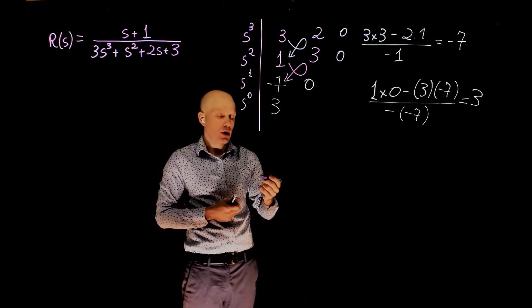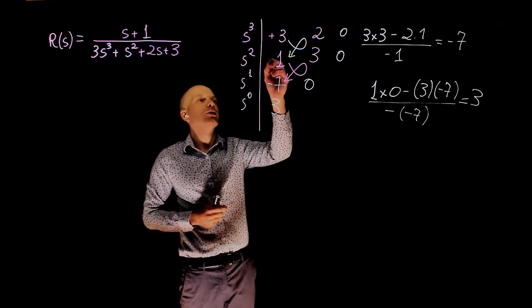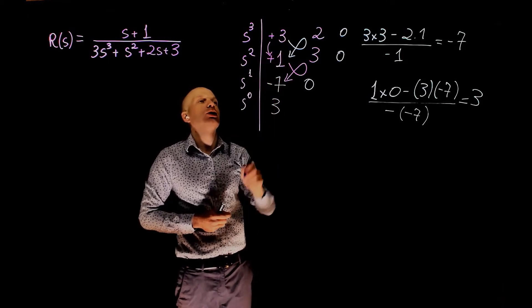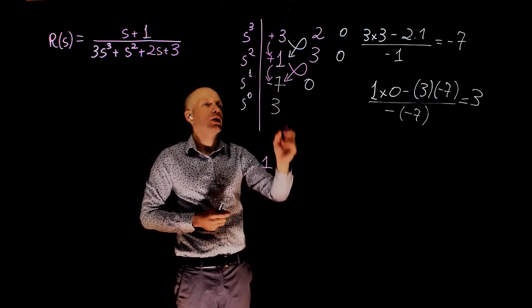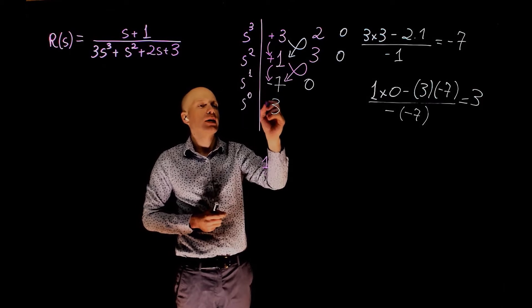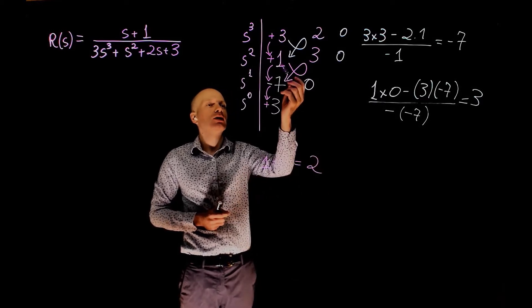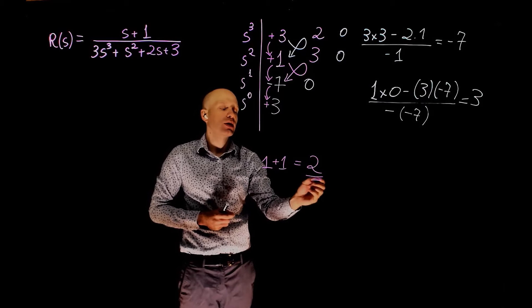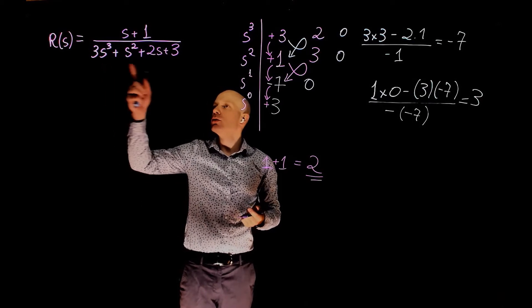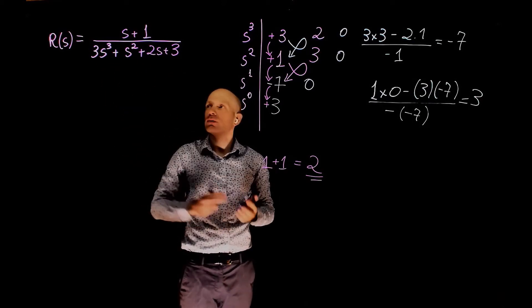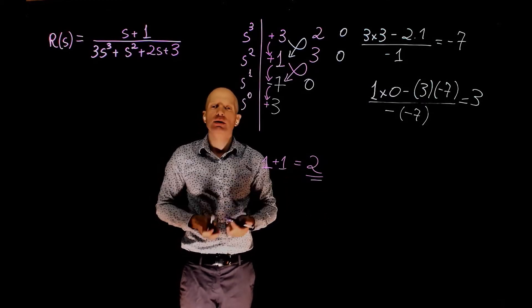Now we can look at sign changes in the first column. Starting with a positive number going to a positive number — no sign change. Going from positive to negative 7 — that is 1 sign change. Going from negative to positive — that is 1 more sign change. So we have 2 sign changes, meaning 2 unstable roots. Out of the three poles of this transfer function, 2 have positive real parts and will make the system unstable.